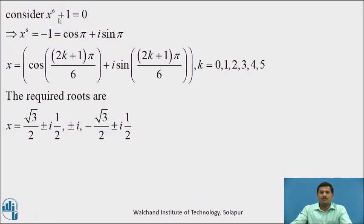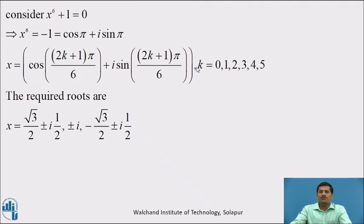Considering x⁶ + 1 = 0: taking 1 to the right side gives x⁶ equal to minus 1, written in polar form as cos π plus i sin π. The sixth roots are given by x equal to cos((2k+1)π/6) plus i sin((2k+1)π/6), where k equal to 0, 1, 2, 3, 4, 5. Substituting the six values of k gives the six distinct roots: x equal to √3/2 ± i(1/2), ±i, and minus √3/2 ± i(1/2).